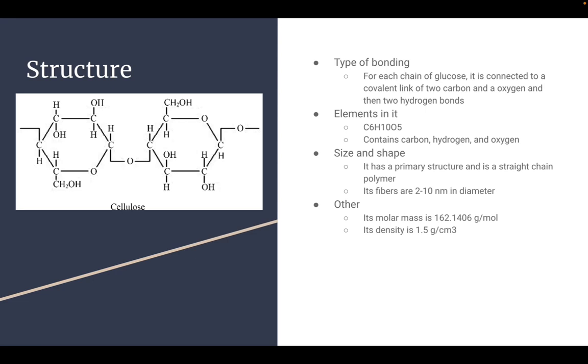Elements in it are carbon, hydrogen, and oxygen. And its molecular formula is C6H10O5. Size and shape: it is a primary structure and is a straight chain polymer, and its fibers are 2 to 10 nanometers in diameter.